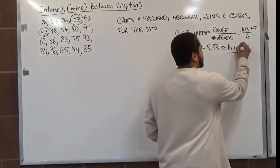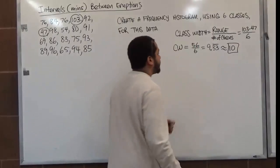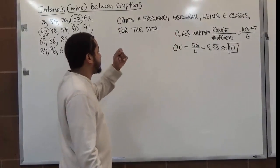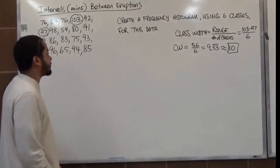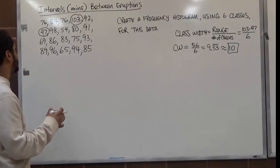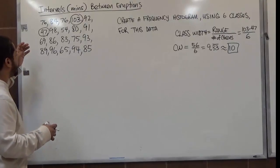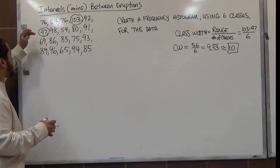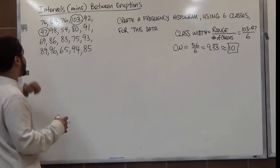Be very careful when you take this step because no matter if this number gives you a whole number nine, we're still going to round it up to the next value — that always has to be done. So nine point thirty-three rounds up to ten. The class width is ten, meaning there are ten values from the lowest to the highest to make each class.